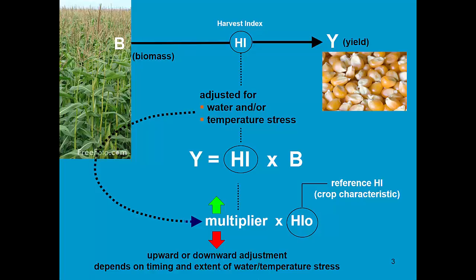So the harvest index is adjusted for water and temperature stress, and that is expressed by the multiplier.